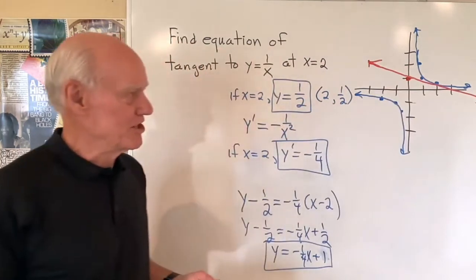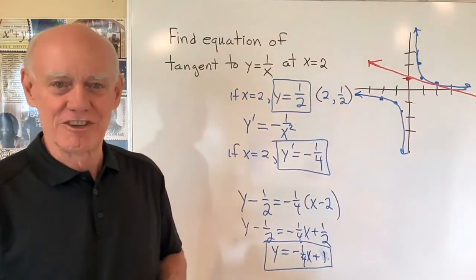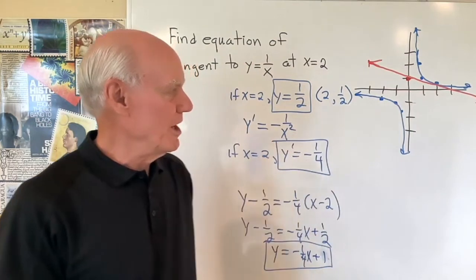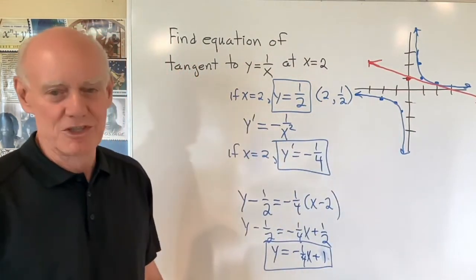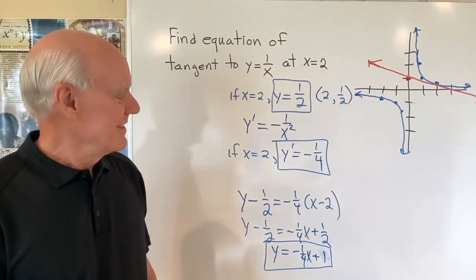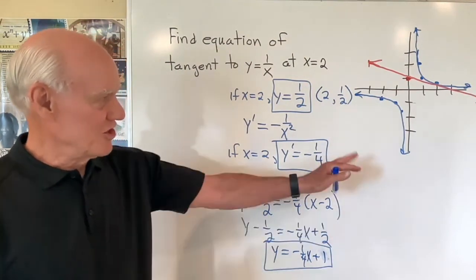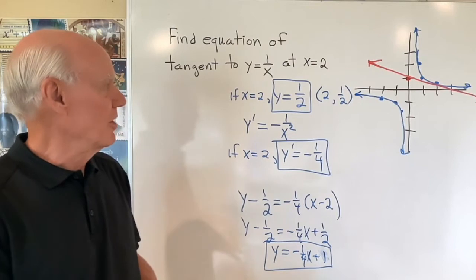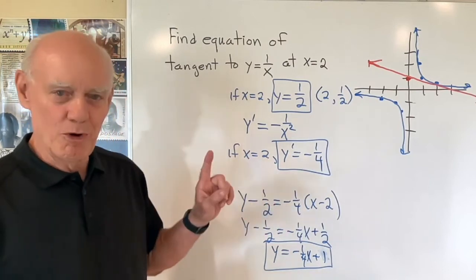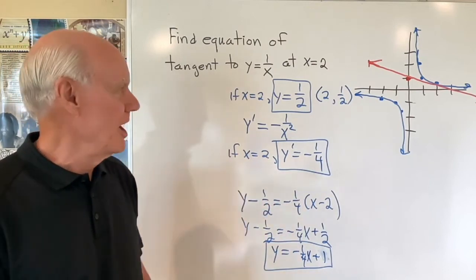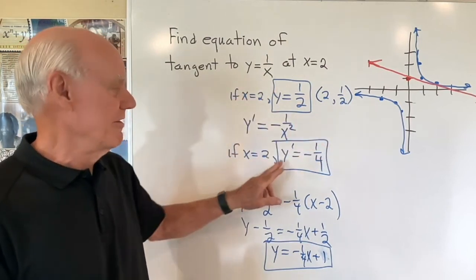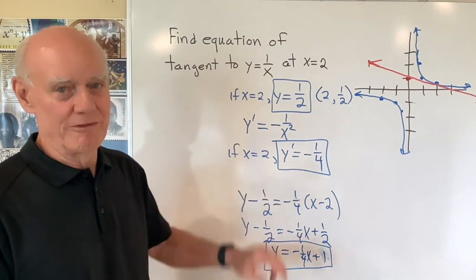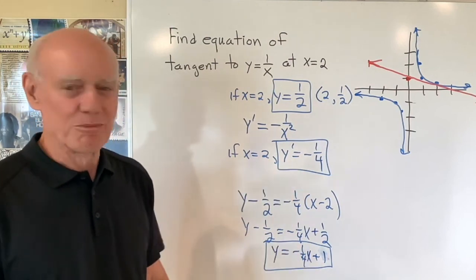And that seems to make sense, right? That looks like the line tangent to the graph at that point. Of course, I could go to Wolfram Alpha or Desmos or one of those graphing programs, just put this in and I would see it very accurately. This is just kind of a rough sketch. But anyways, you want to find the equation of the line tangent, you need a point on the line, you need the slope of the line. The equation itself gives you a point on the line. The derivative of the equation gives you the slope of the line. So nice little problem.